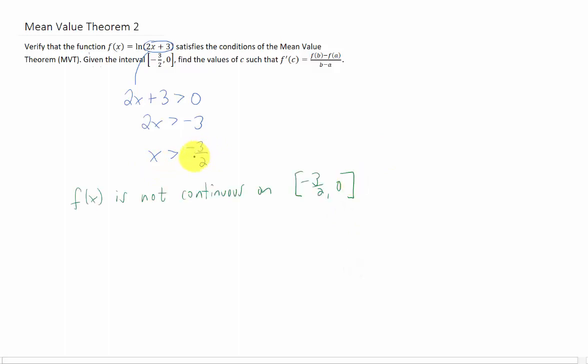Well, negative 3 halves is one of the endpoints of our interval. So our function f of x is not continuous on this closed interval, negative 3 halves to 0. In fact, if we took a equals negative 3 halves and tried to plug that into this function to try to satisfy the conclusion of the mean value theorem, we would get that this function is undefined at negative 3 halves.